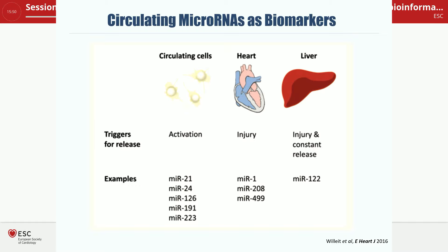It's important to realize that most of these circulating microRNAs come from circulating cells. The first description in 2008 was in relation to cancer, but please bear in mind that circulating cells carry a lot of circulating microRNAs. Liver microRNA-122 is actually the first microRNA to receive a letter of support from the FDA as a marker for liver injury in clinical trials. This gives some hope that in addition to proteins and metabolites, we may also get RNAs as future biomarkers, at least in clinical research.